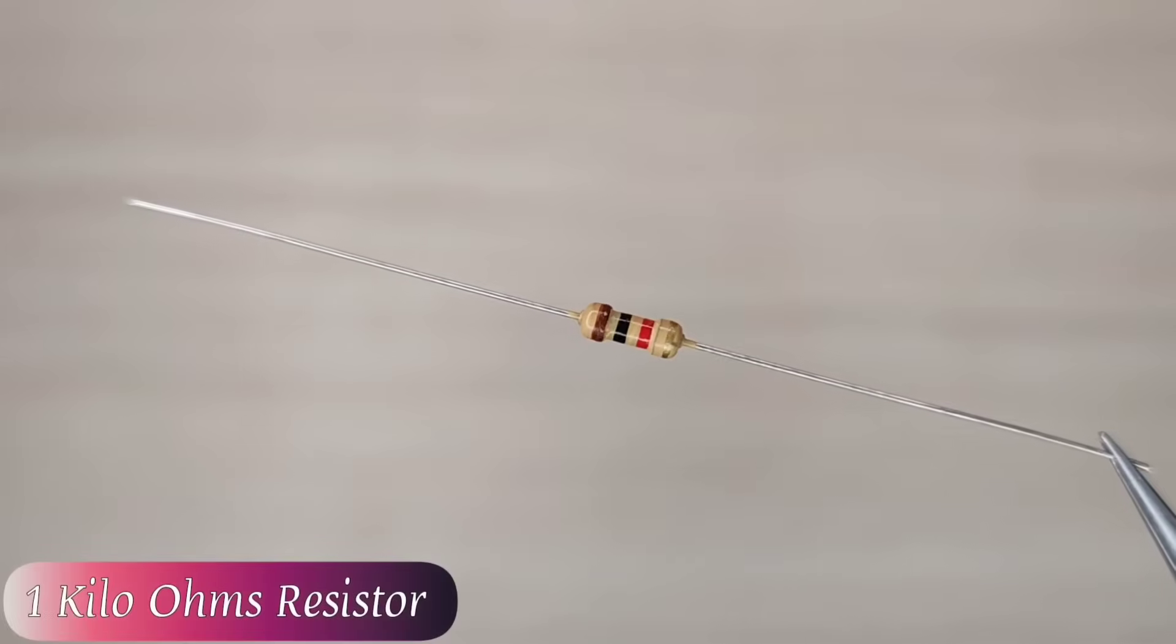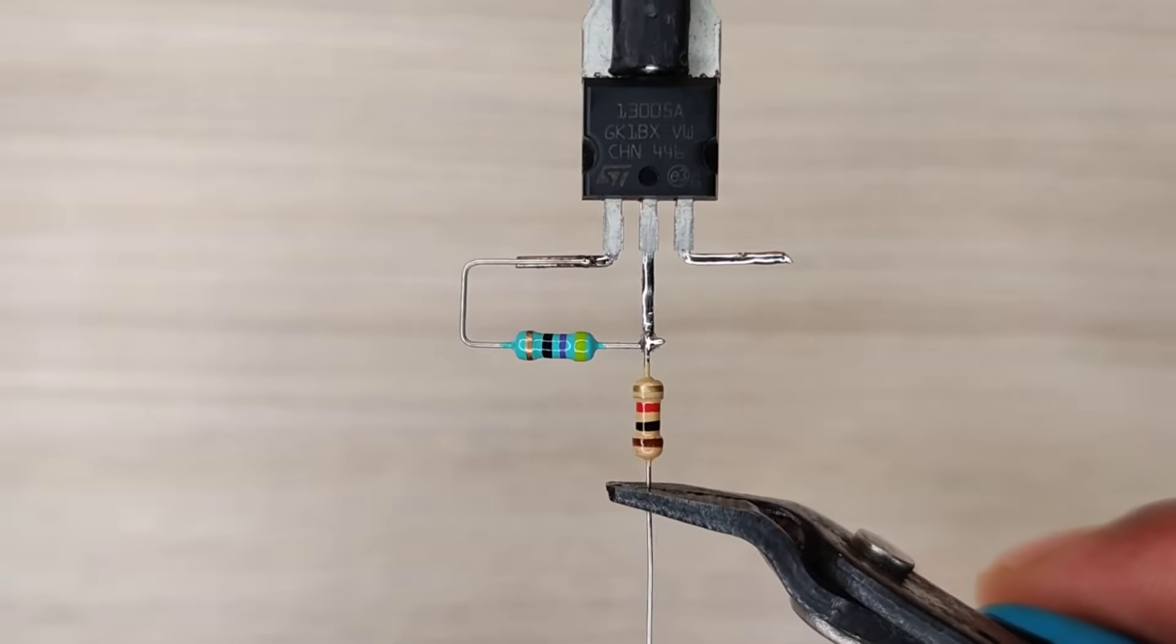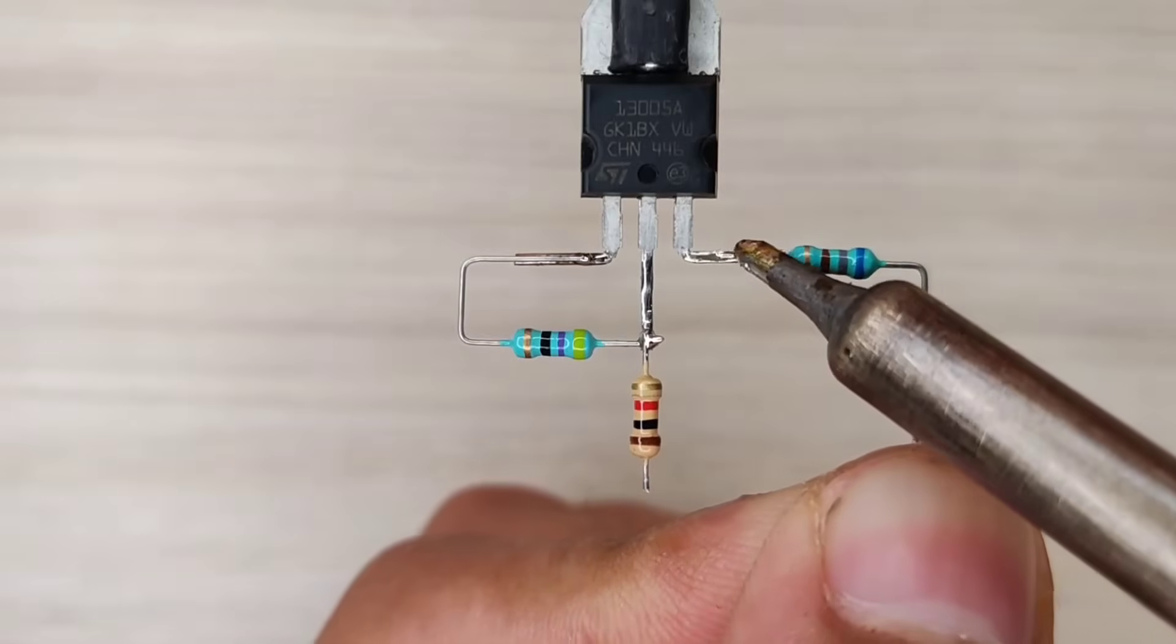Take 1 kilo ohms resistor and solder on pin 2 of transistor. And take 680 ohms resistor and solder on pin 3 of transistor.